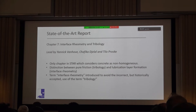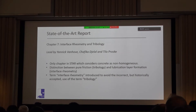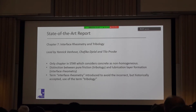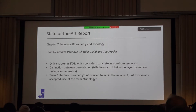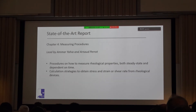Chapter 7, which was not in the original plan but was deemed very important, is what we call interface rheometry and tribology, done by Yannick Vanhoof, Shafika Jalal, and Tilo Krokloske. It's the only chapter in the entire state-of-the-art report that looks at concrete as a non-homogeneous material — one that doesn't have the same properties as a function of space. We distinguish between friction and tribology on one hand, and lubrication layer formation — which in the case of pumping is a very important aspect — on the other, which we call interface rheometry.